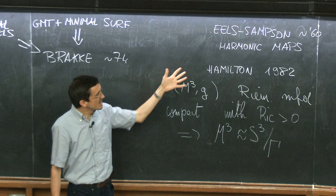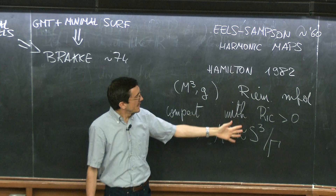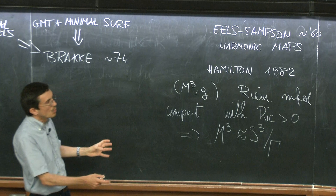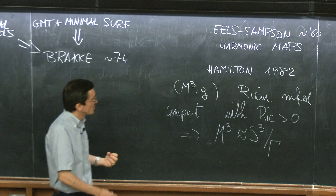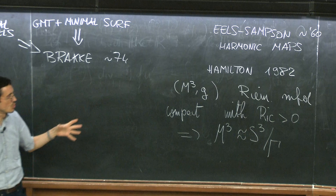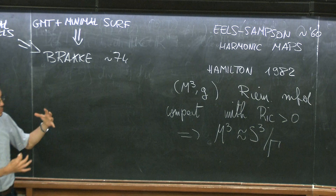Previously, results of this kind used techniques such as Morse theory. The hypothesis on the Ricci curvature was used to study the behavior of geodesics, the geodesic flow, to construct deformations of parts of the manifold. But Hamilton introduced a completely different technique, acknowledging the inspiration by Eells and Sampson.